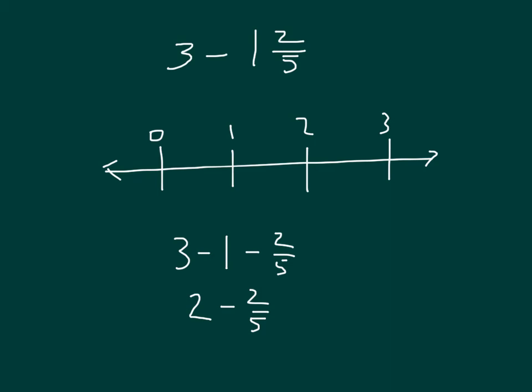Just as before, with 2 minus 2 fifths, we know our answer will be between 1 and 2. We know that we are talking about 5 fifths, so I will divide this into 4 parts. I'm sorry. Draw 4 lines to divide it into 5 equal parts. And I know that I travel back 2 fifths because I was now at 2 instead of 3 because I was subtracting 1 and 2 fifths. So I am at 1 and 3 fifths, which will be my answer.